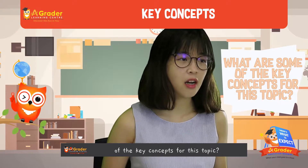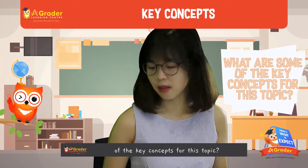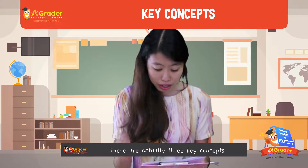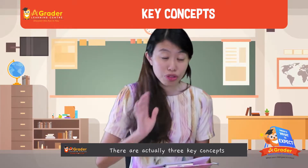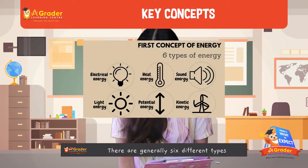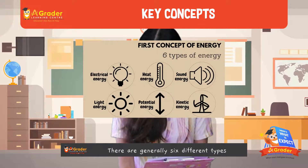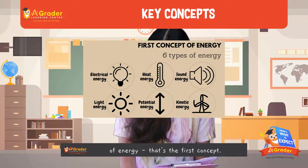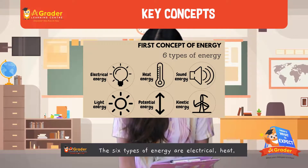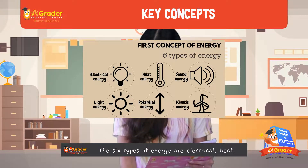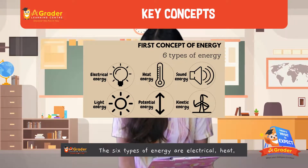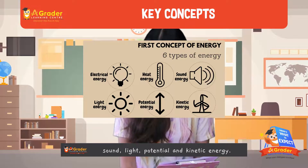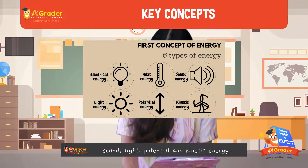So what are some of the key concepts for this topic? There are actually 3 key concepts to take note of. The first is that there are 6 types of different energy — electrical, heat, sound, light, potential, and kinetic energy.